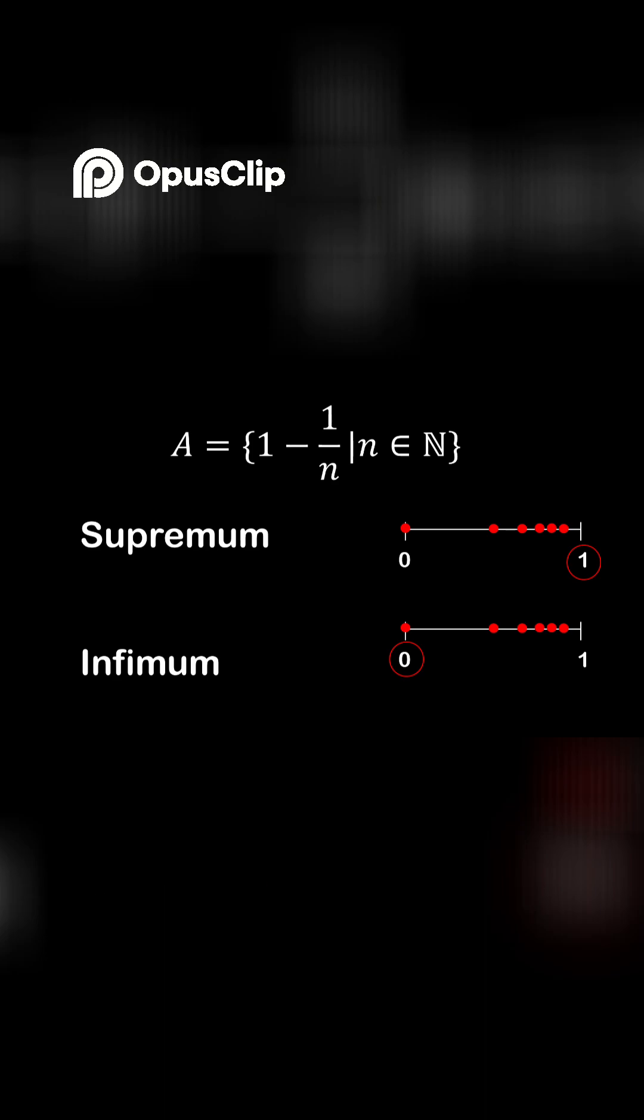In this instance, we do actually have an infimum because the lowest value that N could be is 1, and 1 minus 1 is 0. So, the infimum is 0 in this instance.